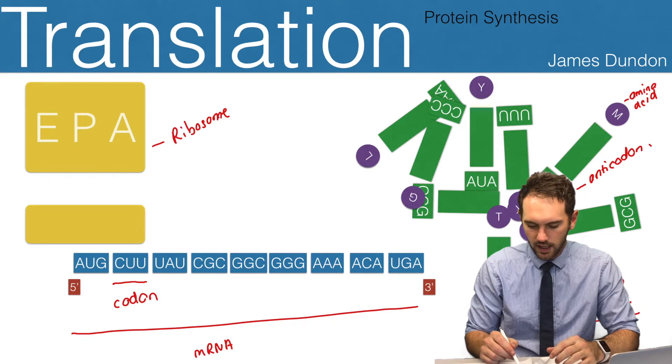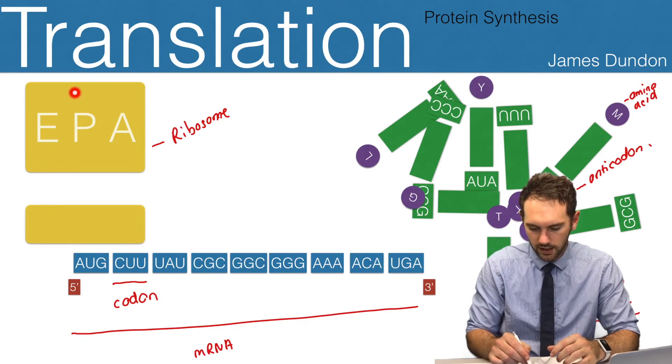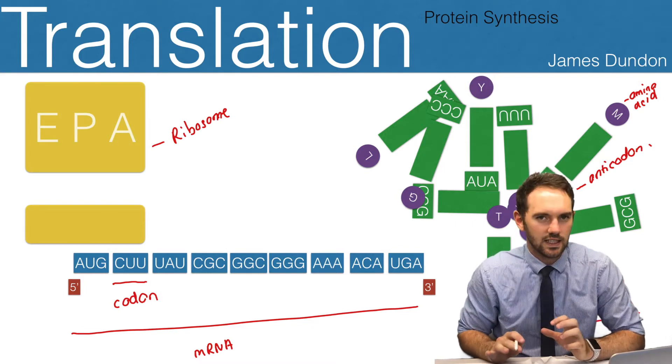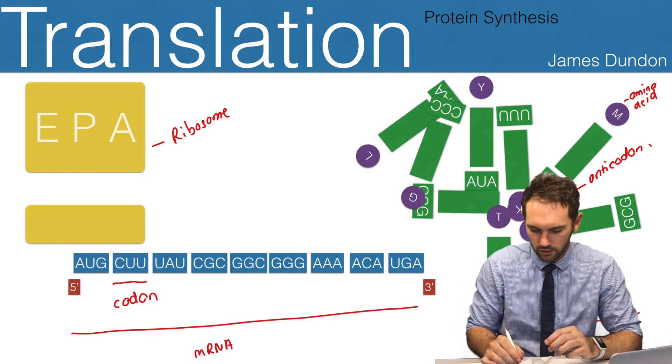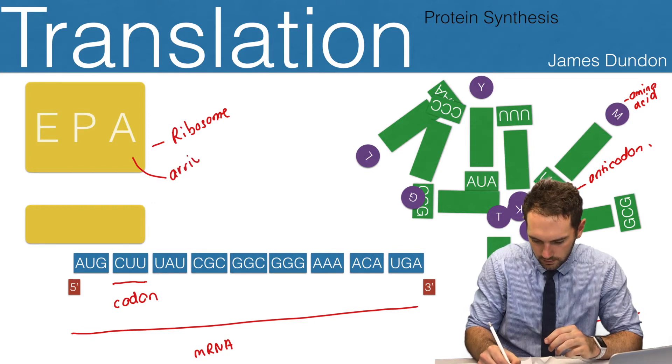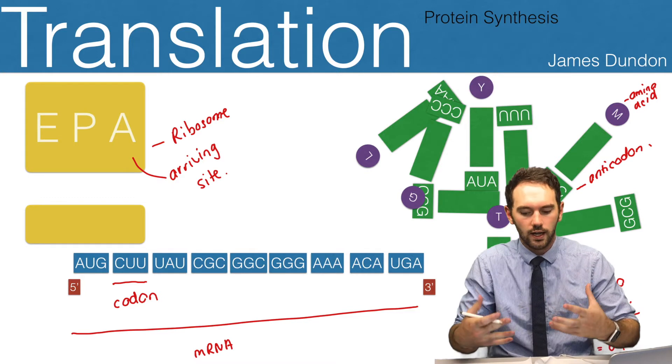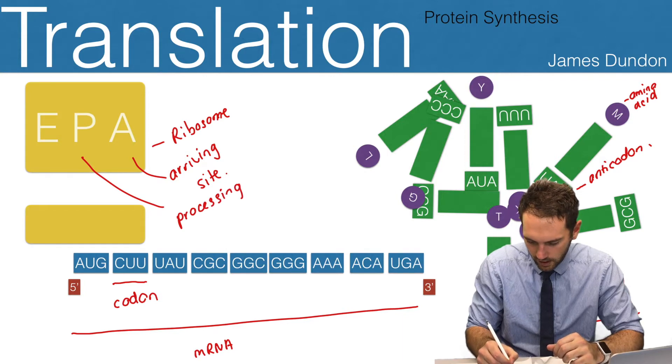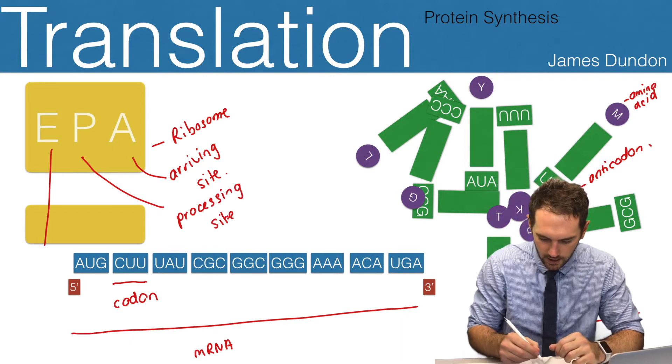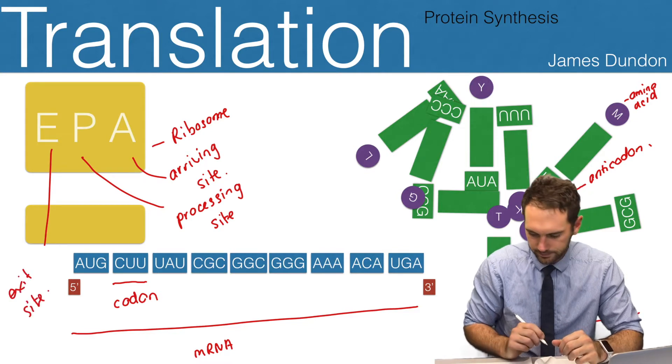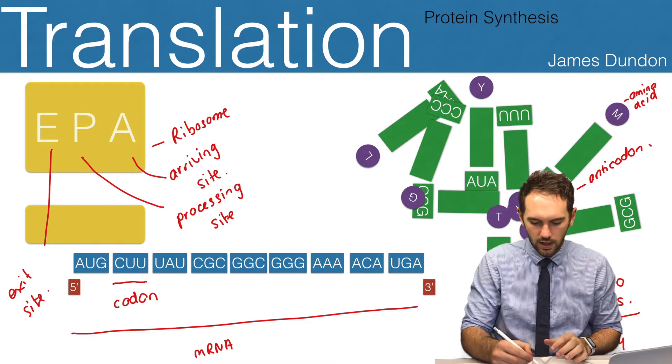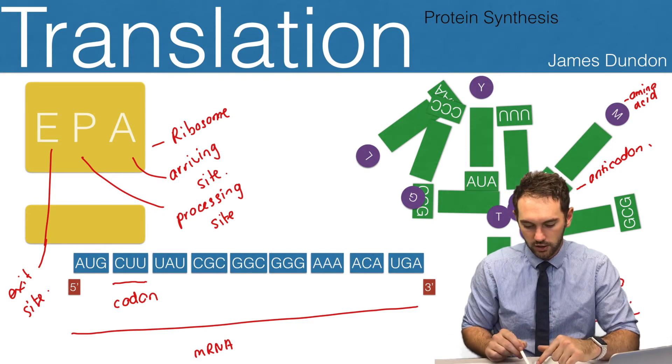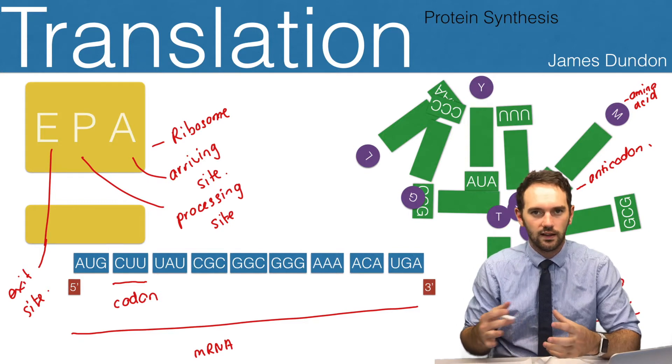The other thing you'll notice about the ribosome is I've got these three letters: EPA. For simplicity, I'm going to call them things that they aren't technically called. The A I'm going to call the arriving site, the P I'm going to call the processing site, and the E I'm going to call the exit site. These three sites are going to really help us understand the process of using this mRNA sequence to create an amino acid sequence.